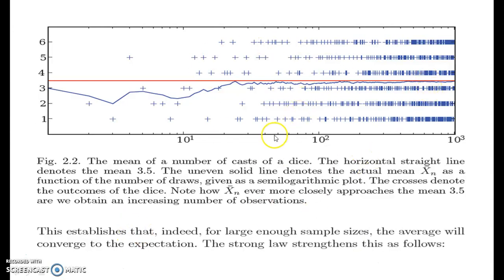Now let us understand it with the diagram here. The mean of a number of casts of a dice. The horizontal straight line denotes the mean 3.5. This is a horizontal red line that we have here. The uneven solid line denotes the actual mean x̄n as a function of the number of draws. So for example, if you have done with a number of draws at 10 to the power of 1, there will be a lot of variations. 10 to the power of 2, it seems to stabilize a little bit and then 10 to the power of 3 it is more of you get a clarity on the analysis.